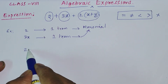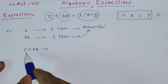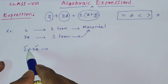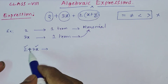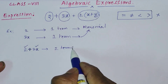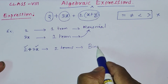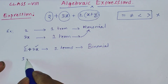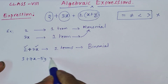Now I am writing 2 plus 7x. Here this is the first term and this is the second term — these two terms are combined by the mathematical operator plus. Since there are two terms, this is called a binomial.